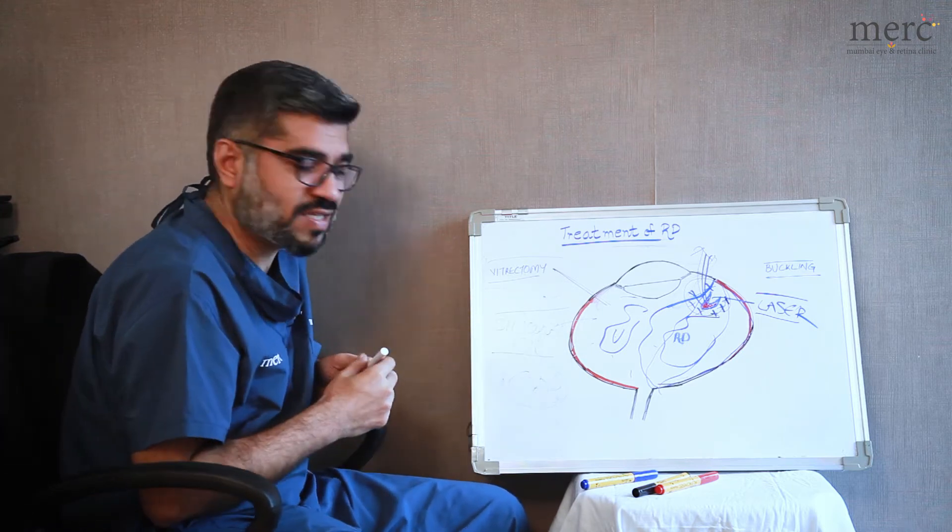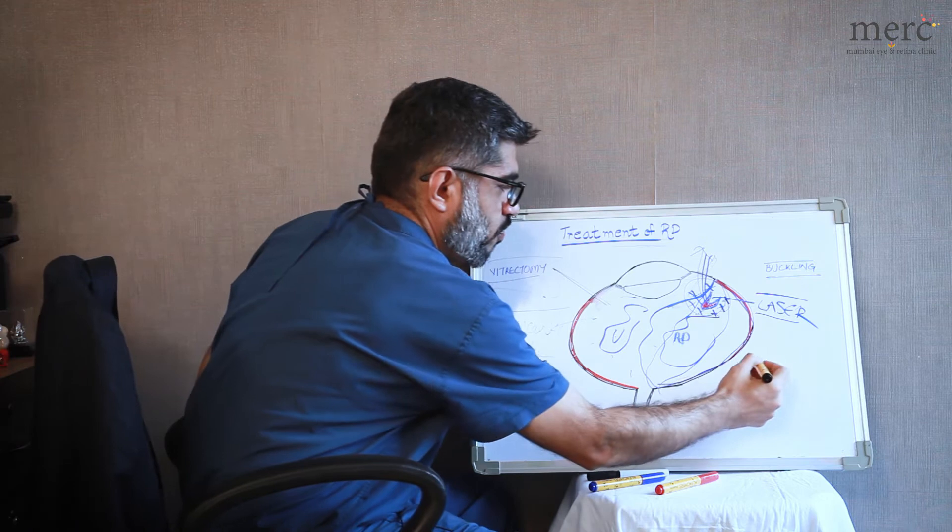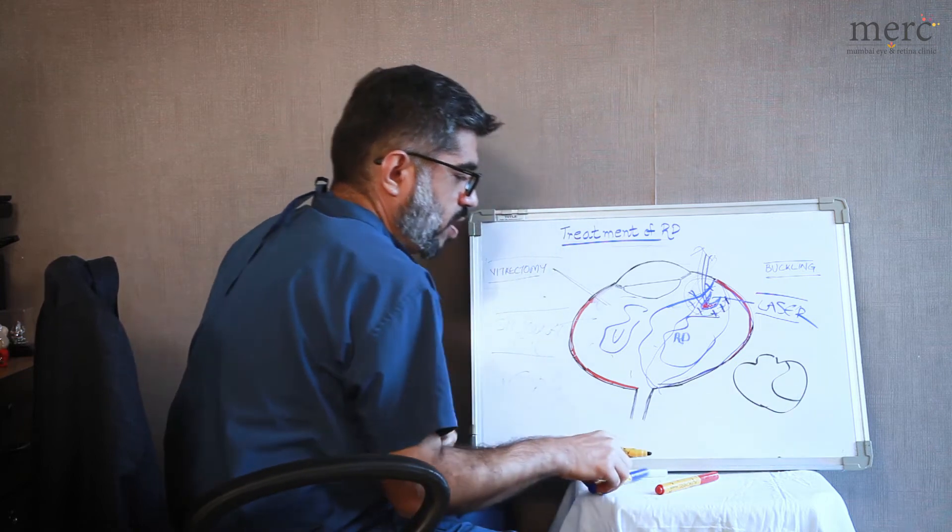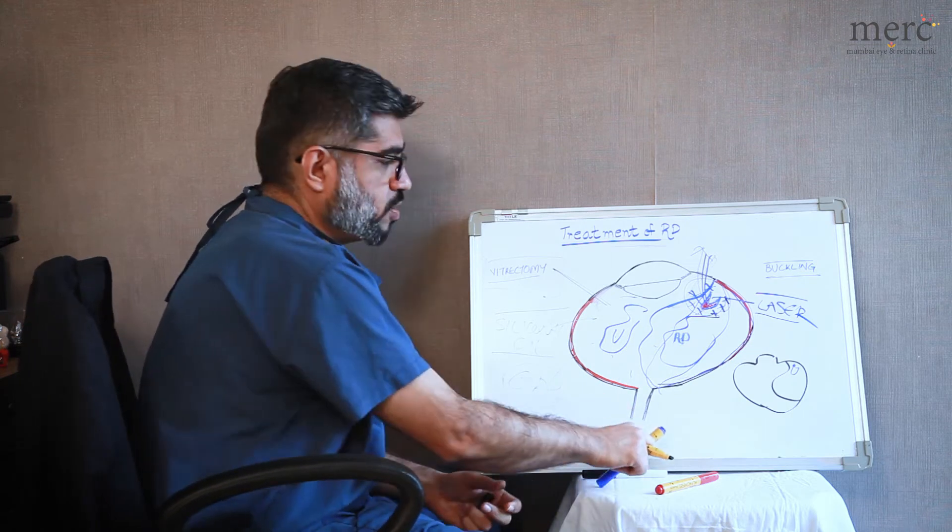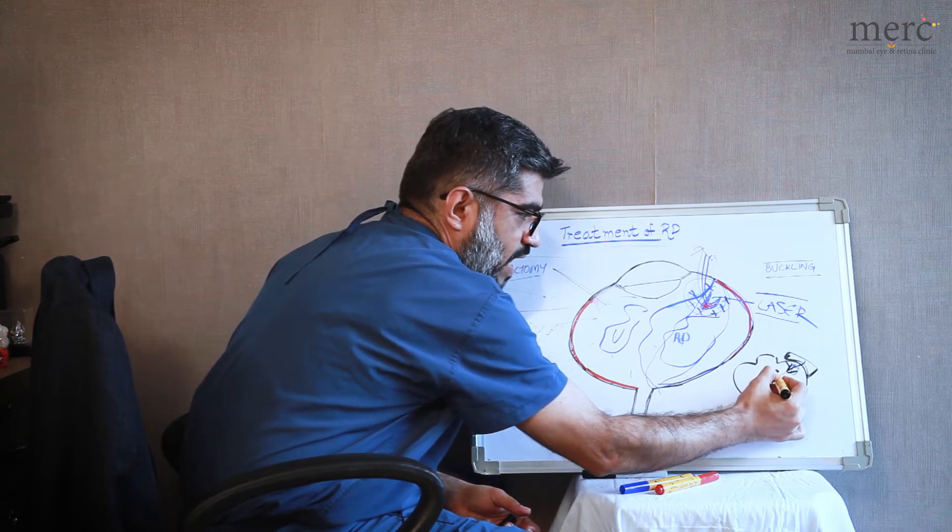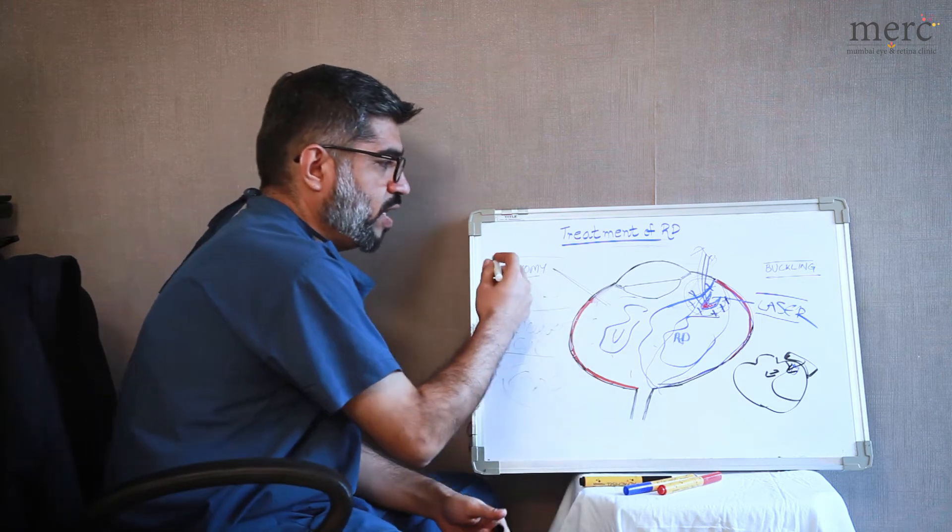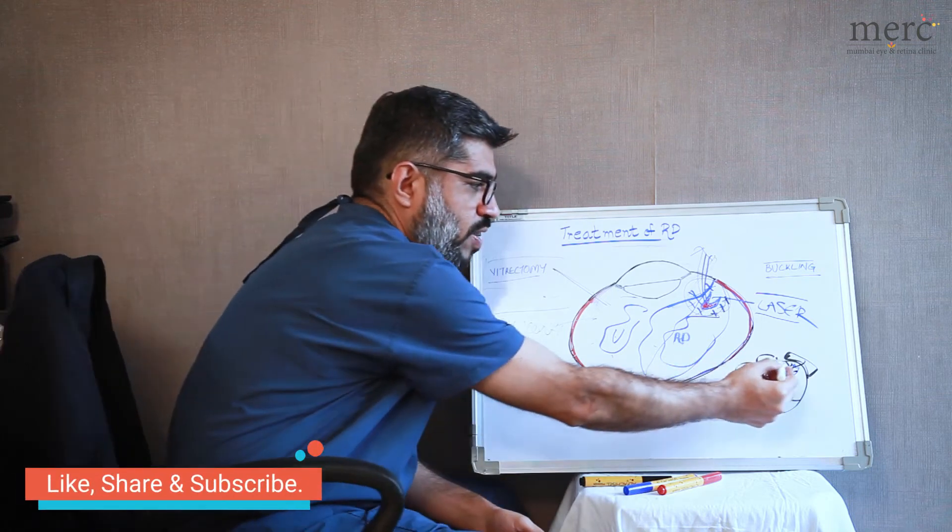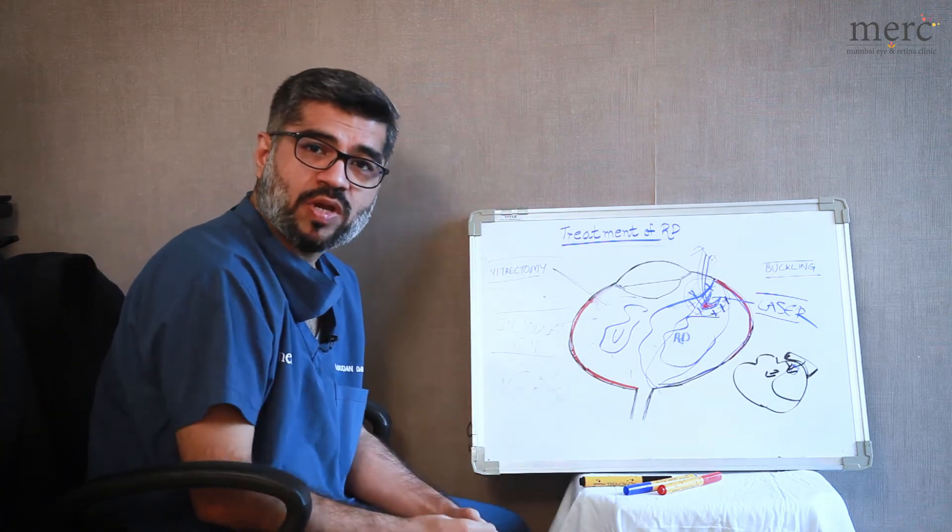This is a surgery which is done from the inside of the eye. Now what is done in a buckling surgery. In a buckling surgery now this is the shape of the eye. This is a retinal detachment. This is the retinal tear which was there. What is done in a buckling surgery is we just put a plastic piece from the outside and press the eye towards the inside. So buckling surgery works in a different way in which we neither go inside nor remove the fluid from the inside of the eye but what we do is we try and support this retinal tear from the outside by putting a plastic piece.